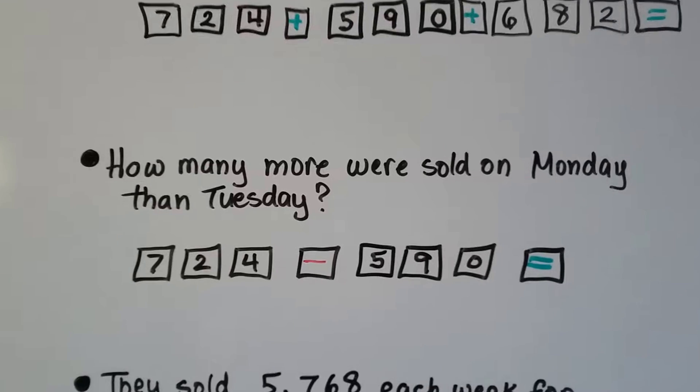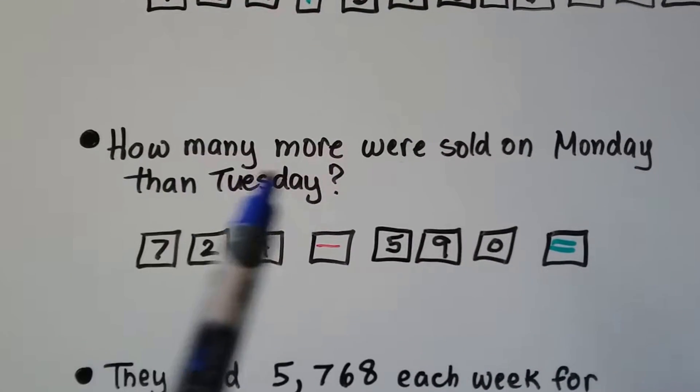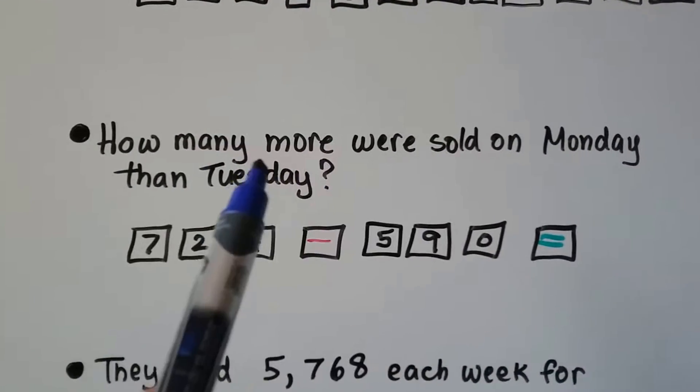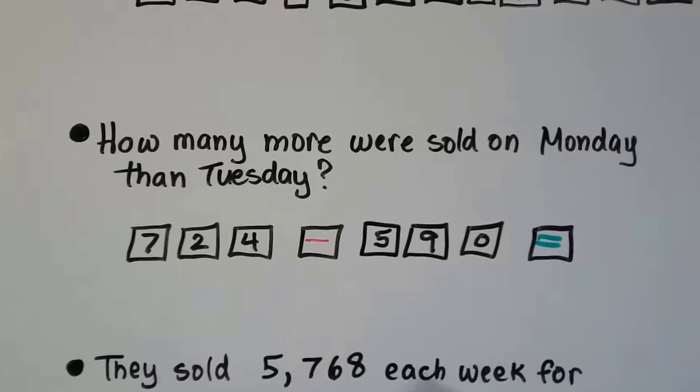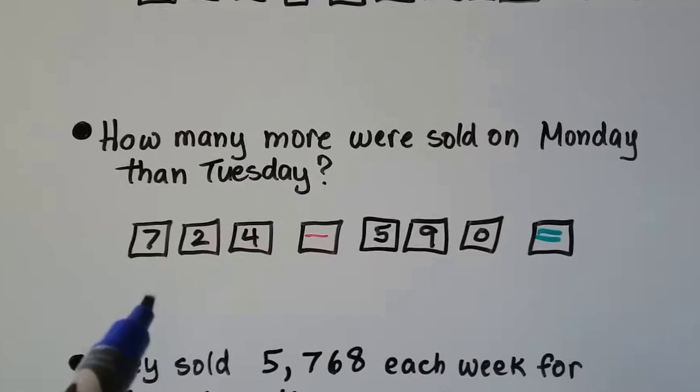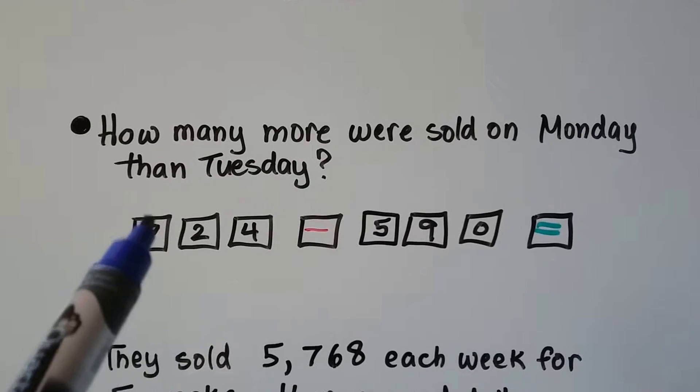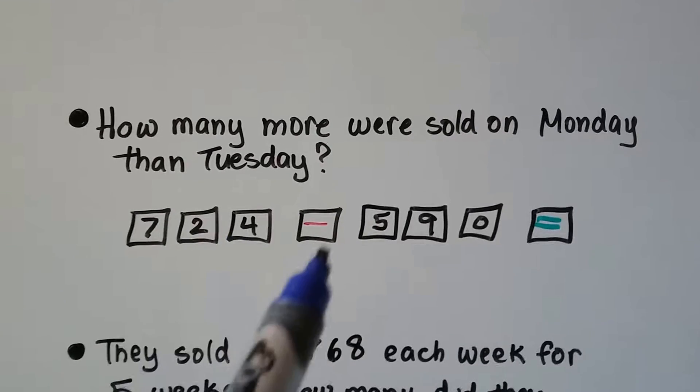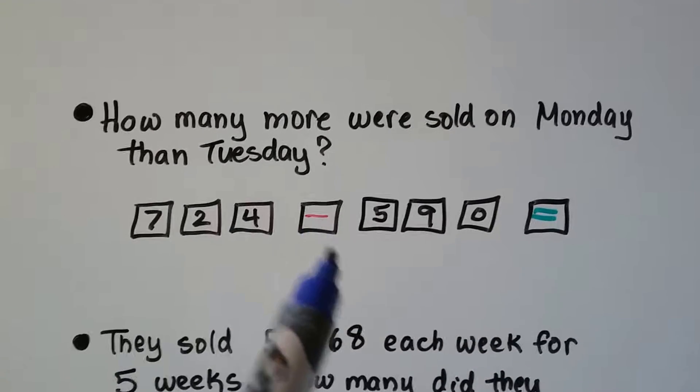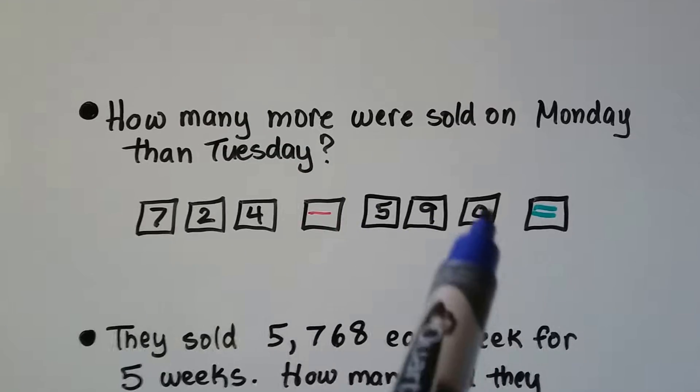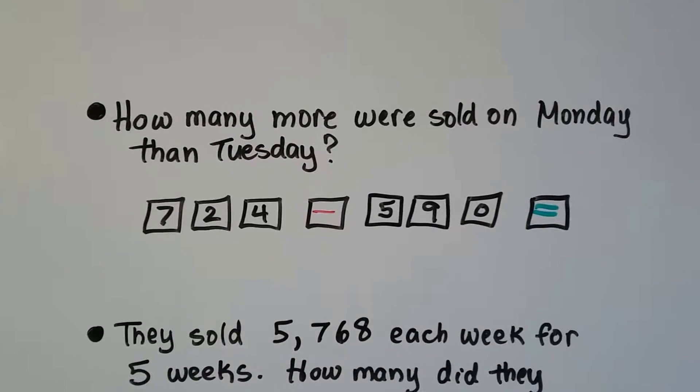How many more were sold on Monday than Tuesday? Well, now we're comparing and we need to find a difference between the two. How many more were Monday? That's subtraction. We take the Monday number and put in a 7, and then a 2, and then a 4, and hit the subtraction button. Then we put in 5, and a 9, and a 0, and the equal, and that'll give us the difference.